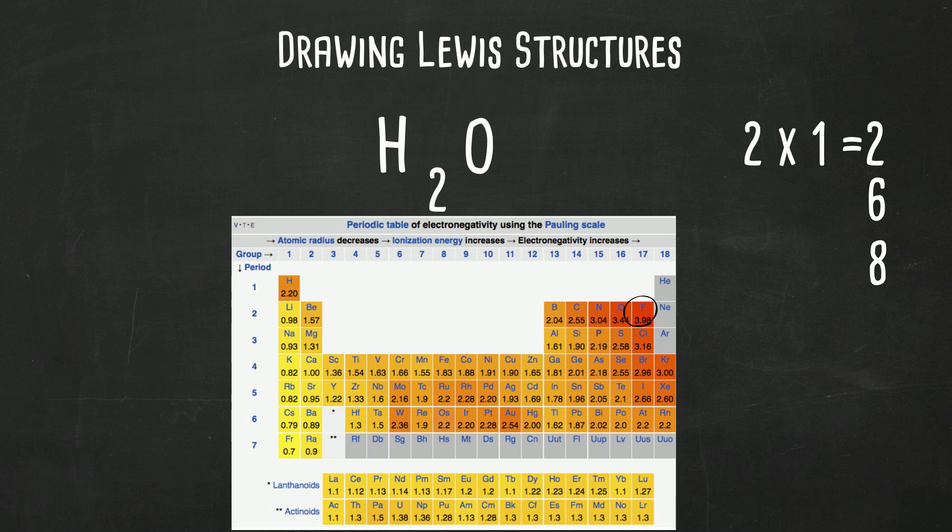As you move from left to right the electronegativity as you go towards fluorine gets greater. And as you go from the bottom to the top it also gets greater. You can use that rule of thumb to figure out which element has the lowest electronegativity. Now there is an exception: hydrogen always goes on the outside.